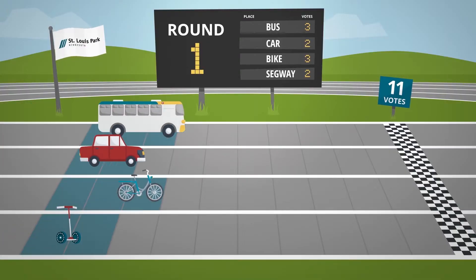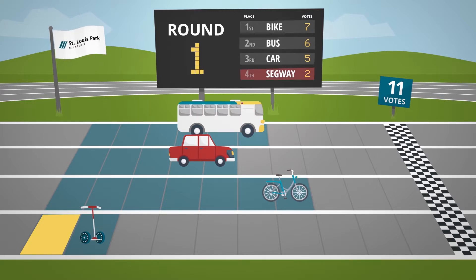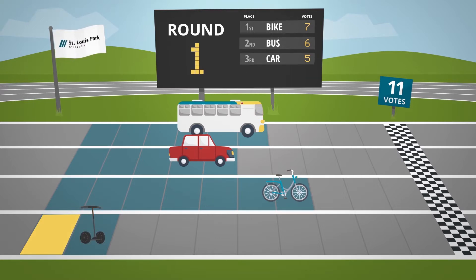You can see that vote has gone to Segway. Even though they left their first choice blank, their second choice is still counted — it is the next highest choice marked on their ballot. As in past scenarios, Segway has the fewest votes and is eliminated. You can see that vote then goes to their third choice, Bus.